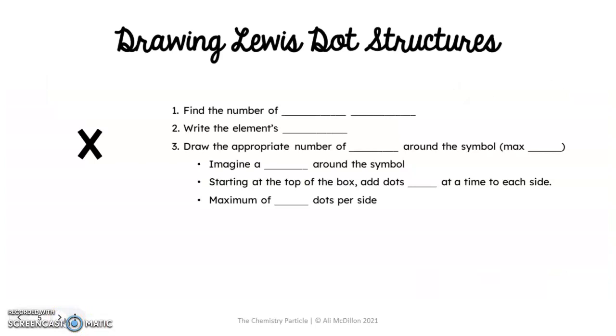When we're drawing a Lewis dot structure, we first have to find the number of valence electrons, and that is what we do from the periodic table. You find the element on the periodic table, you determine what group number it's in, and then that will tell you the number of valence electrons. Then you will write the elemental symbol and draw the appropriate number of dots around the symbol. Remember, a maximum of 8. So we're just going to do the first 18 elements on the periodic table. The maximum number of energy levels that you guys will deal with are 3, which means the maximum number of electrons will be 8.